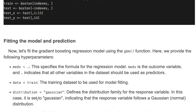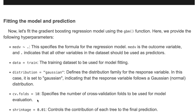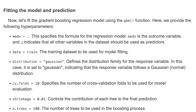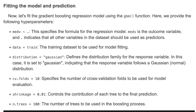Now let's fit the gradient boosting regression model using the gbm function. Here we provide the following hyperparameters. The formula specifies the regression model: 'medv' is the outcome variable and dot indicates that all other variables in the dataset should be used as predictors. We also provide the training data. The distribution parameter defines the distribution family for the response variable — in this case we use Gaussian.